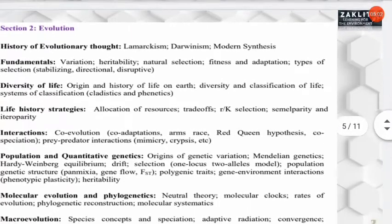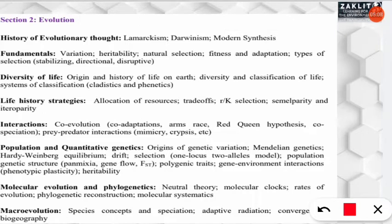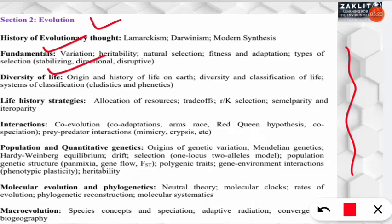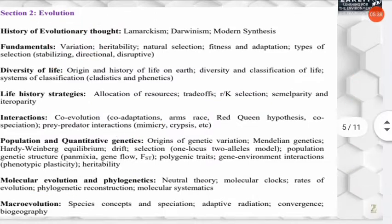The second section is evolution, which is the characteristic feature of this paper not found as much in the NET EBS paper. It covers fundamentals of evolution, diversity of life, life history strategies such as R and K selection, interactions, population and quantitative genetics, molecular evolution and phylogenetics, and macroevolution.